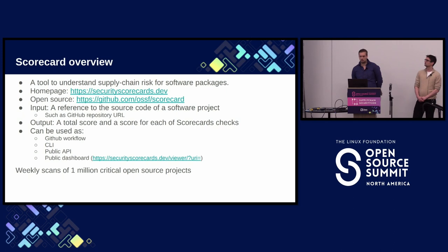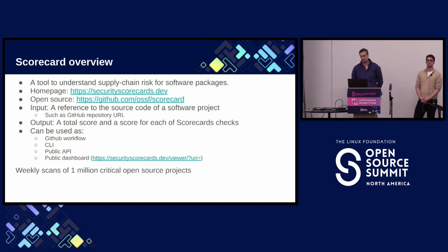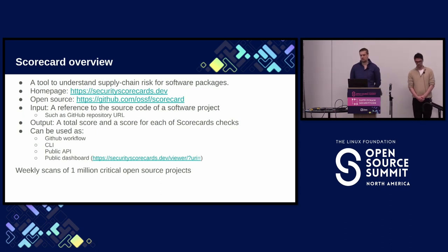In most cases it's a reference to a GitHub repository, but Scorecard also supports GitLab, and I just saw recently that it also supports PyPI — a reference to a PyPI package if that package is hosted on GitHub. Prior to structured results, Scorecard outputs a total score for the risk of the software package and a score for each Scorecard check. We'll get into the Scorecard checks in just a minute.